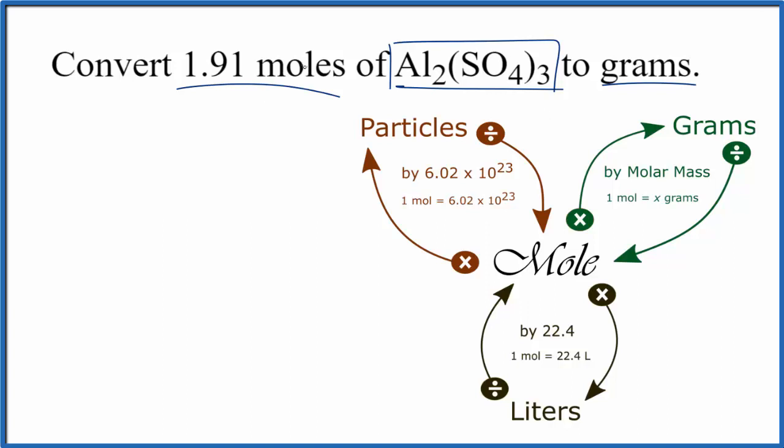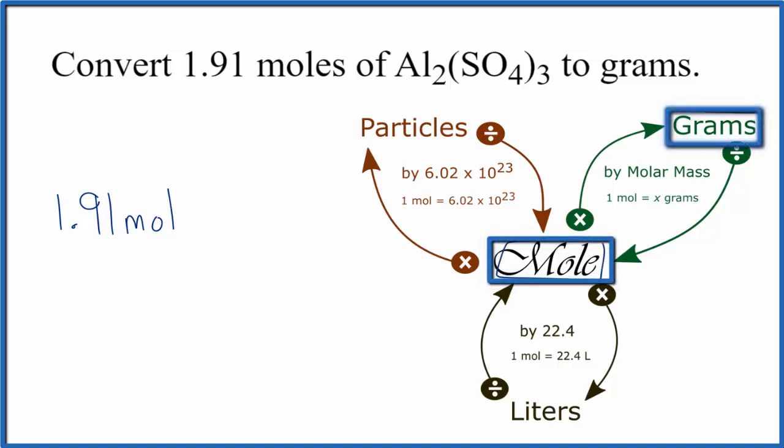So we have our 1.91 moles of aluminum sulfate, and we want to convert that to grams. When we go from moles to grams, we're going to multiply by the molar mass.